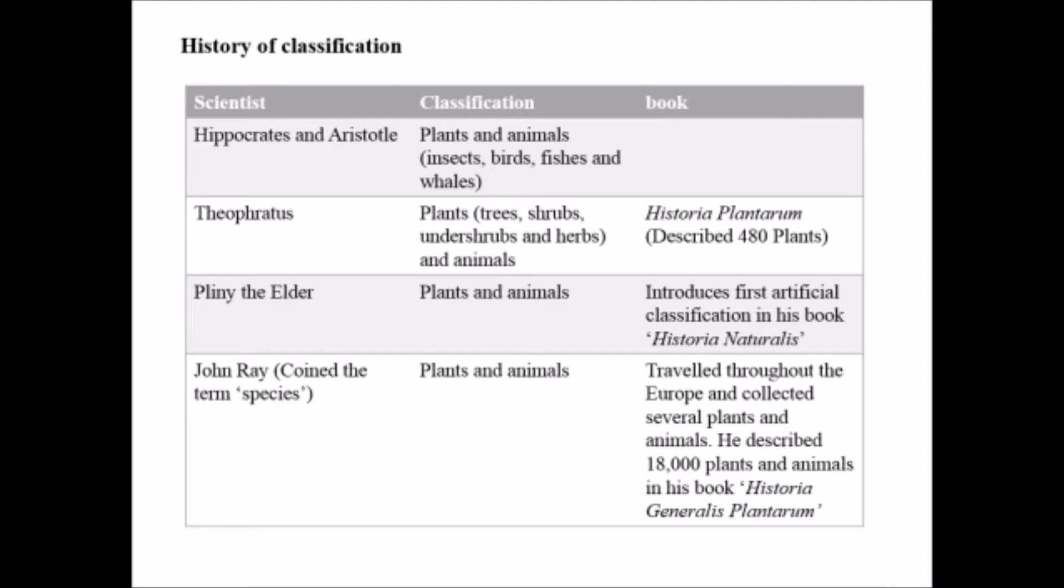Hippocrates and Aristotle classified organisms into plants and animals, where animals were further categorized into insects, birds, fishes, and whales. Theophrastus also classified organisms as plants and animals, and plants were further categorized as trees, shrubs, undershrubs, and herbs. Theophrastus is the father of botany and he described 480 plant species in his book Historia Plantarum.